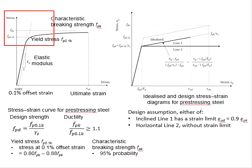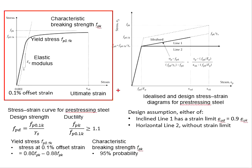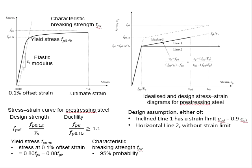From the stress-strain curve, we are able to obtain the characteristic strength of the pre-stressing steel. This includes the characteristic breaking strength, Fpk, which is defined as the highest point of the pre-stressing steel. The corresponding strain, epsilon Uk, would be the ultimate strain of the pre-stressing steel.